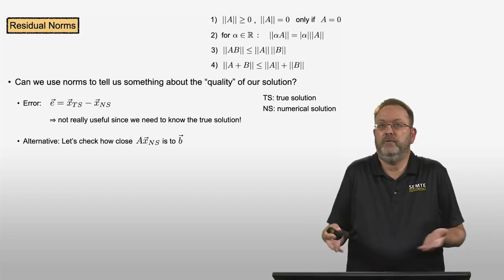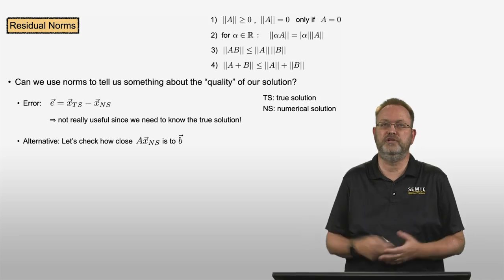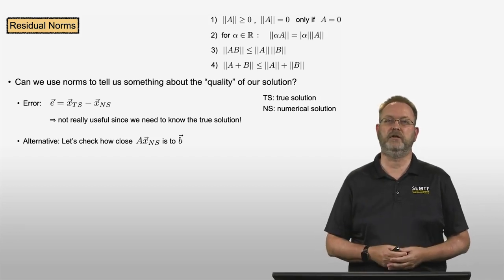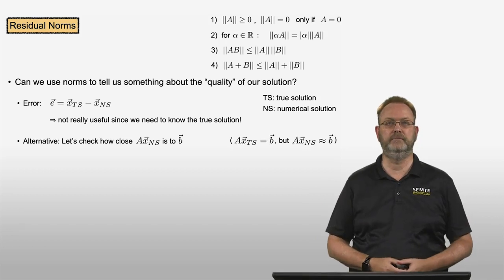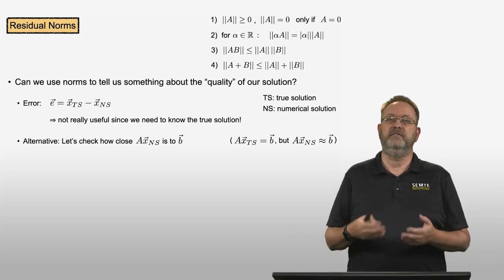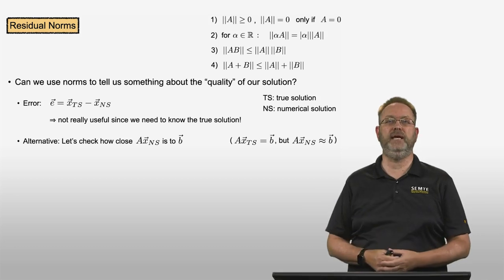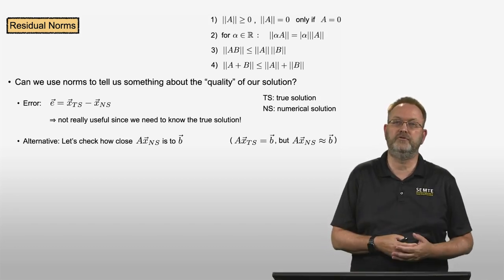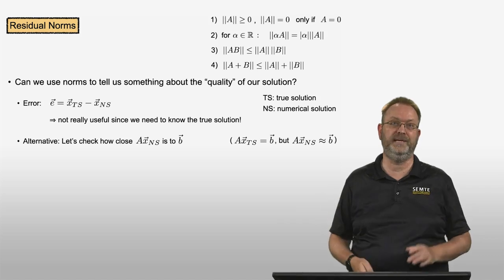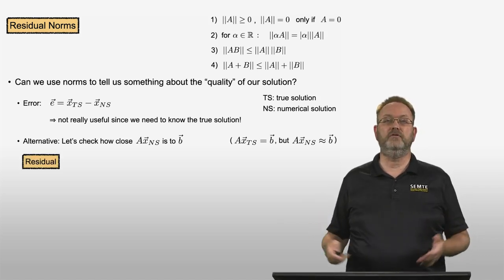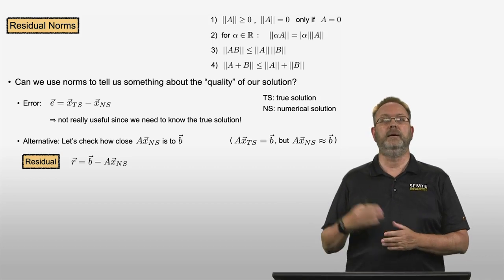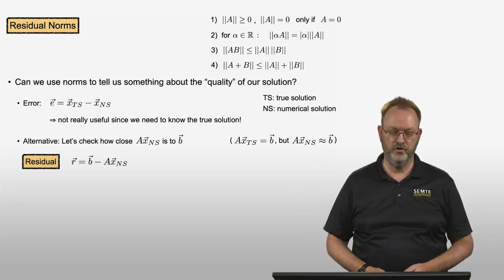But how can we ascertain, how can we quantify how good our solution is? Here's an alternative: let's check how close A times my numerical solution is to the right hand side B. I know that if my numerical solution were my true solution, then A times the true solution is equal to B. But if my numerical solution is not exactly equal to my true solution, A times the numerical solution won't be equal to B, but hopefully it will be close to B. And that's what the residual is — the difference between the true right hand side B minus A times my numerical solution.